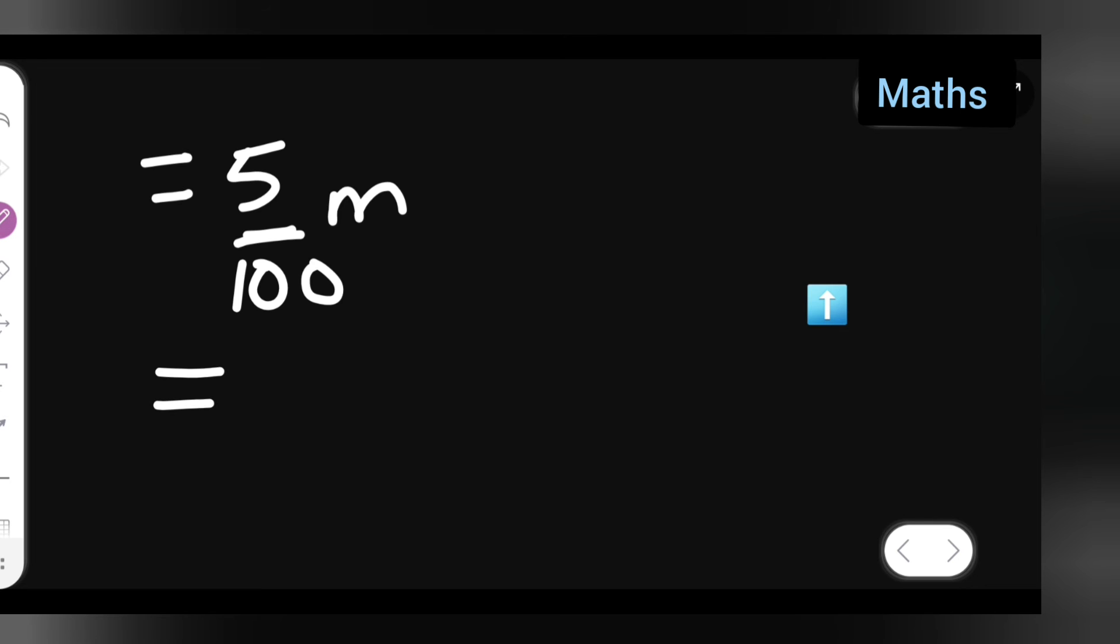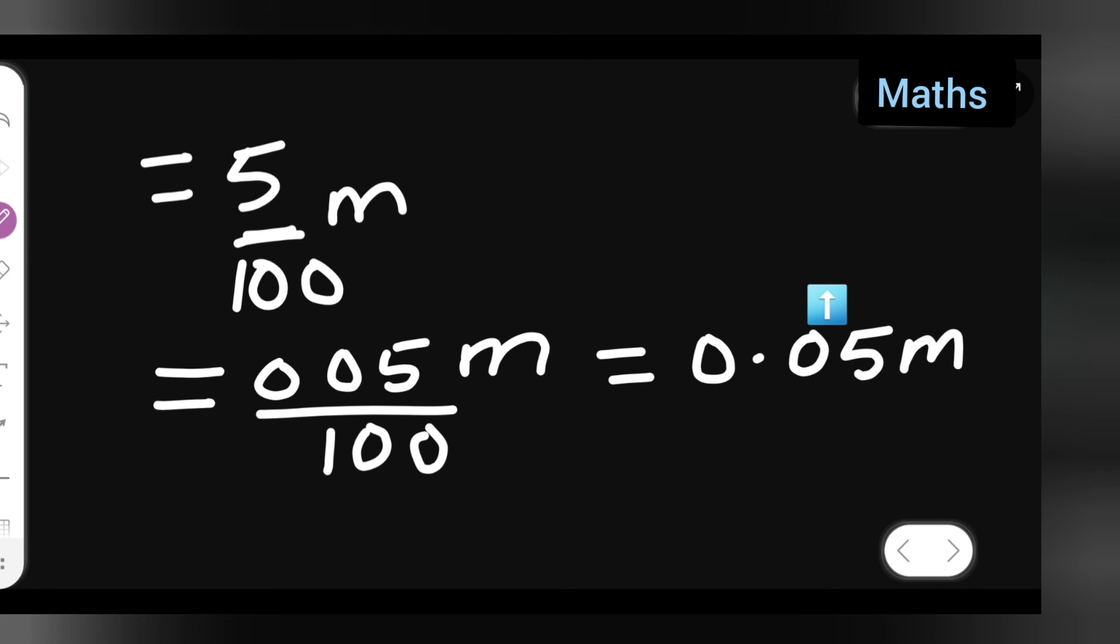Now you'll have to write this in decimal form, so it will be 0.05 meter. Since there are 2 zeros over here, 1, 2, the decimal point will come here.